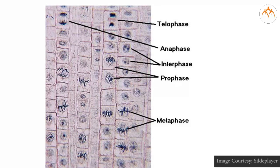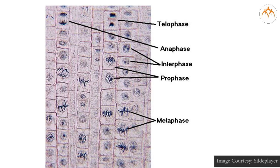Telophase: this phase is said to be the reverse of prophase. Migration of sister chromatids is complete. Spindle fibers disappear completely. The chromosomes form thin threads of chromatin. Nuclear membrane and nucleolus reappear. The cell now has two daughter nuclei at opposite poles.